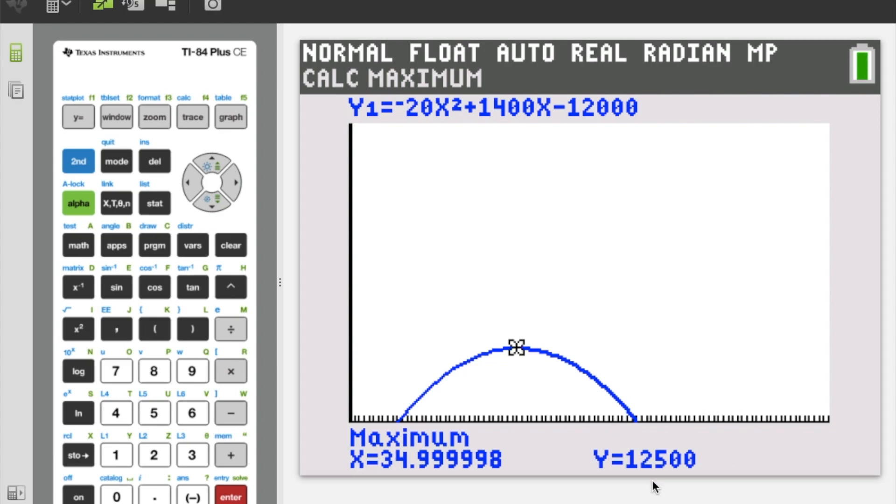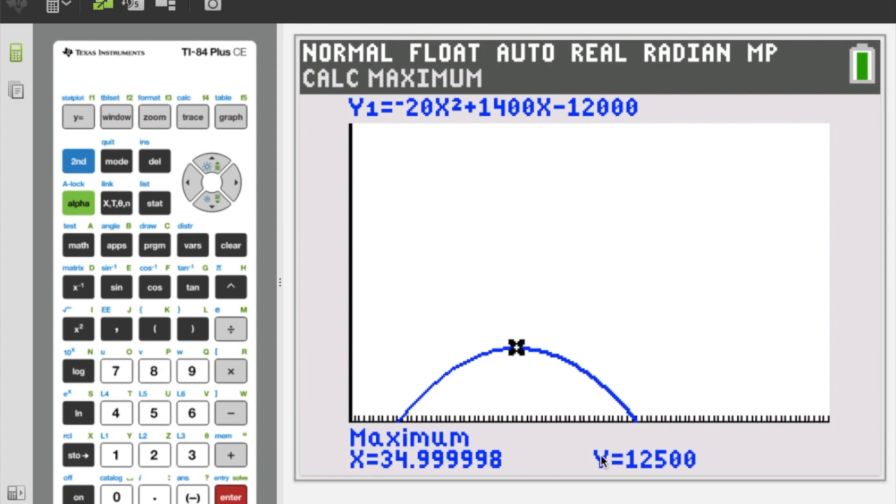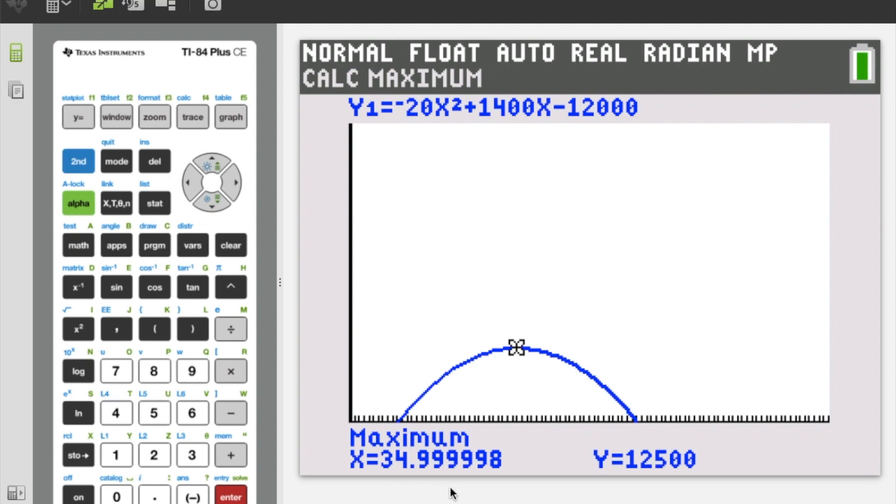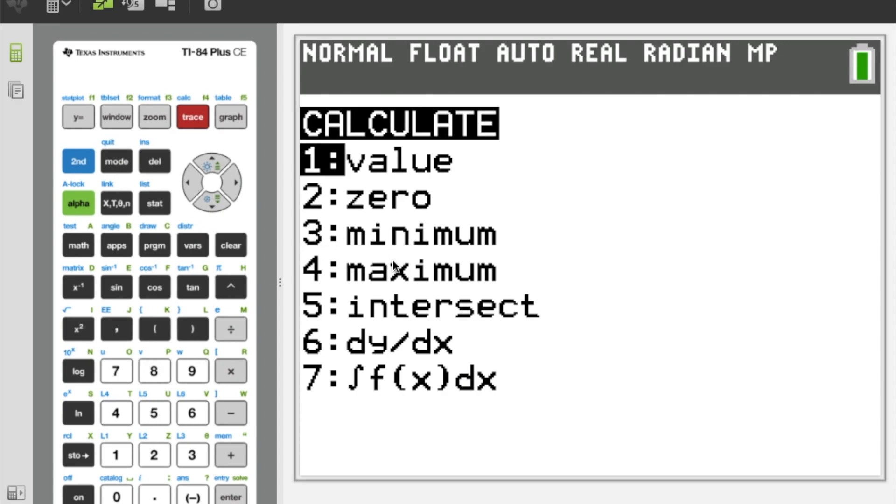And then my y gives me my actual maximized profit. So selling this item at $35 will maximize my profit, and I'll earn $12,500 with that maximized profit. So super easy, just using the second calc min or max depending on what you're being asked to look for. And then the process is exactly the same with the right bound, left bound.